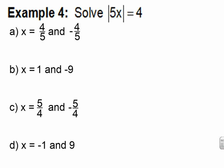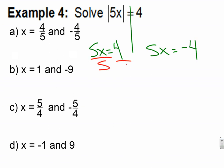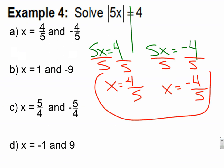Pause the video now as you try example four. Press play to go over your answer. Is everything on the side of X inside the absolute value bars? Yes. It looks so nice, I write it twice — first time equal to positive 4, second time equal to negative 4. I divide both sides by 5: X equals 4 fifths. Divide by 5: X equals negative 4 fifths. Final answer, and of course that's letter A.